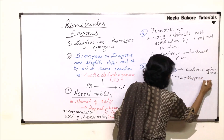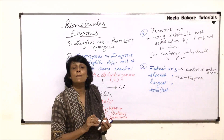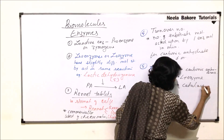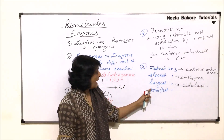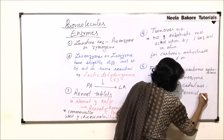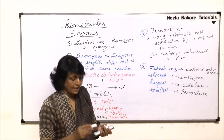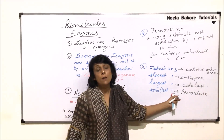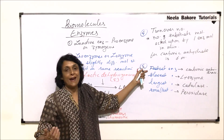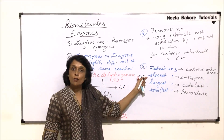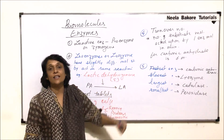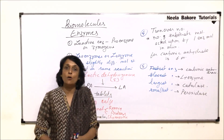The slowest enzyme is lysozyme. Lysozyme is present in our saliva and tears and is a bactericidal enzyme. The largest enzyme is catalase, found in peroxisomes. The smallest enzyme is peroxidase, also known as oxidase, also found in peroxisomes. These four names are important based on rate and size.